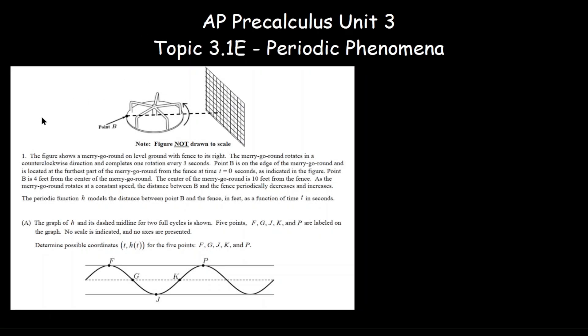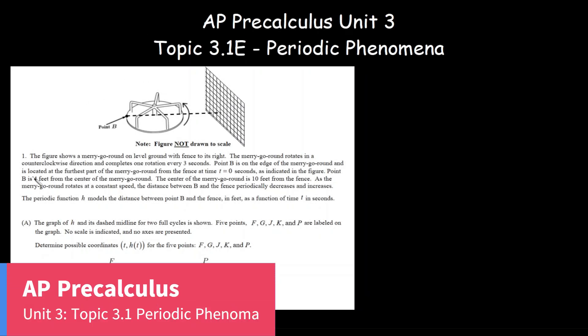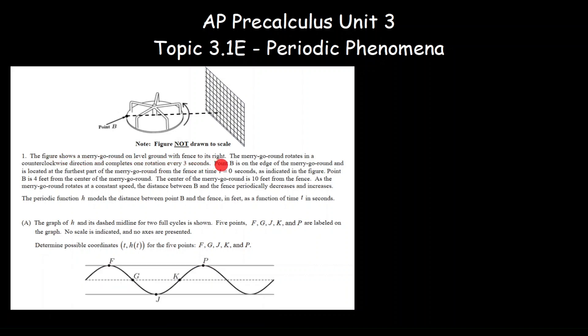Topic 3.1E, Periodic Phenomena. Quick review based on an AP problem. The figure shows a merry-go-round on level ground with a fence to its right. The merry-go-round rotates in a counterclockwise direction, completes one rotation every three seconds. So three seconds is the period.